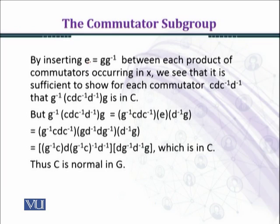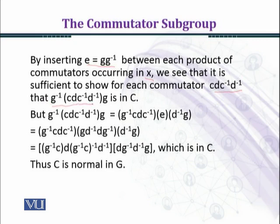By inserting e = gg^-1 between each product of commutators occurring in x, we see that it is sufficient to show for each commutator cdc^-1d^-1 that g^-1(cdc^-1d^-1)g is in C. If we establish this, then we say that C is a normal subgroup of G.